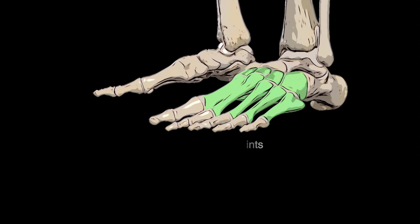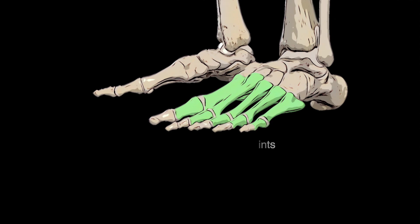The tarsometatarsal joints are supported by the dorsal, plantar, and interosseous tarsometatarsal ligaments. Distal to the tarsometatarsal joints are the metatarsophalangeal joints — a series of synovial condyloid joints with two degrees of freedom, articulating between the five metatarsal heads and the bases of the proximal phalanges. These are supported by the collateral ligaments, plantar ligaments, and deep transverse metatarsal ligament. The final group of joints are the interphalangeal joints, which are synovial hinge joints with one degree of freedom, articulating between the head of the proximal phalanges and the bases of each distal phalanx.